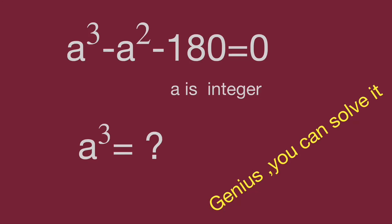Hello, you are watching Balahippo Math Genius Readdle. Here's a very interesting question: a³ minus a² minus 180 equals 0, where a is an integer. What is the value of a³? Can you find the answer? Pause the video and give yourself a try. When you are ready, keep watching to check the final result.